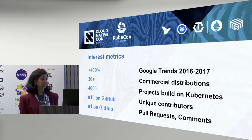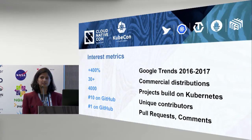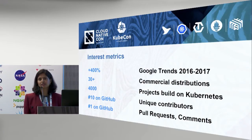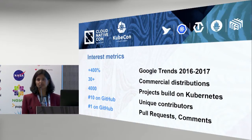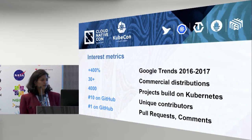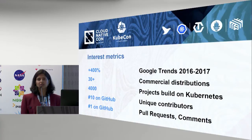Throughout all of this, Google and Red Hat have both learned from the community, but also continue to play a formative role in the Kubernetes project. A few of the statistics that point towards achieving some level of success towards that platform goal: first of all, there's a lot of user and customer interest in Kubernetes, as well as a lot of interest from contributors.